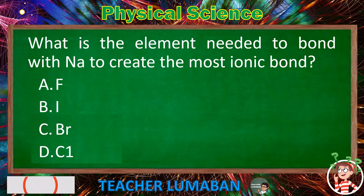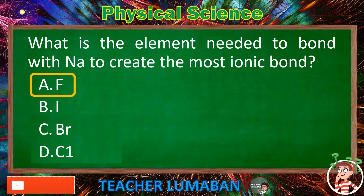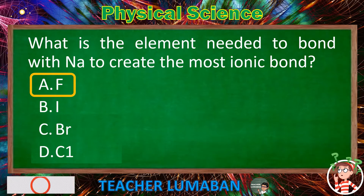The correct answer is Letter A: F. F (fluorine) is the element needed to bond with Na to create the most ionic bond.